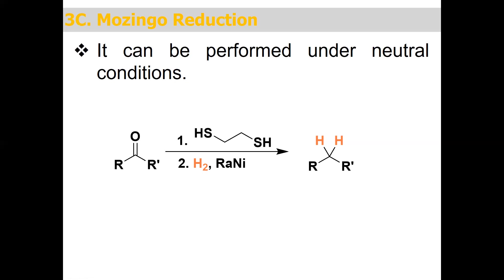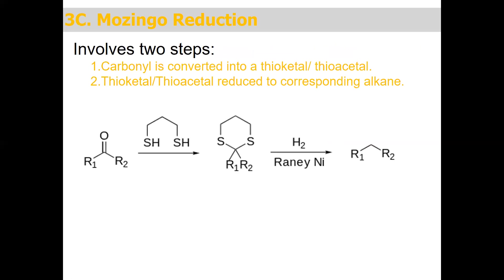The Mozingo reduction has two steps. In the first step, the carbonyl compound is converted to a thioacetal using a thiol reagent. There are two types: thioaldehyde and thioacetal. When the starting carbonyl compound — a ketone — is treated with the thiol, you get a thioacetal group. In the second step, the thioacetal is reduced with hydrogen over a catalyst to give the corresponding alkane.